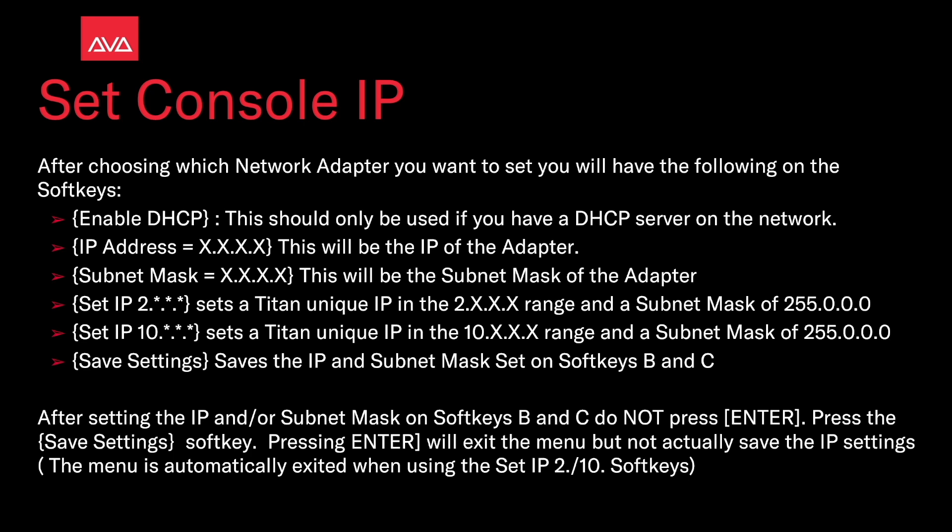After setting the IP and/or subnet mask on soft keys B and C, do not press Enter — press the Save Settings soft key. Pressing Enter will exit the system menu but will not save the IP settings. The menu is automatically exited when using the SetIP 2. or 10. soft keys.